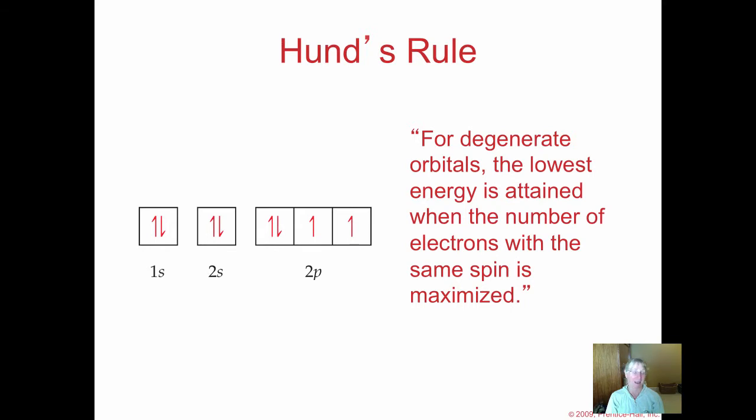Last year we learned Hund's rule as no empty bus seat: don't sit next to the smelly homeless guy if you can help it. Everybody goes to their own seat, and then if more people get on, they come back and double up. The official description: for degenerate orbitals, the lowest energy is attained when the number of electrons with the same spin is maximized. Electrons go in one at a time into an orbital and then come back and double up. We're refining the rules from last year with more nuance.